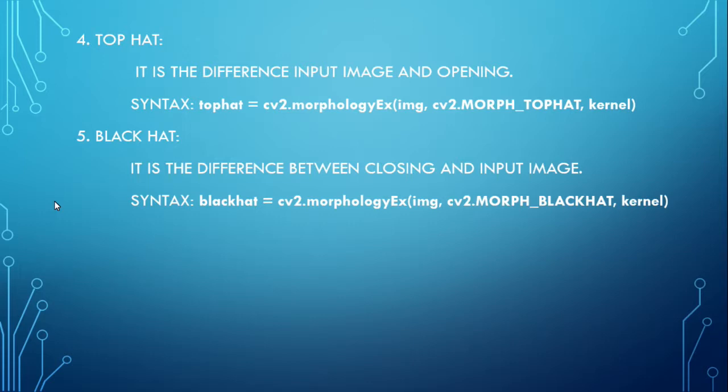The next is black hat. It is the difference between closing and input image. The syntax is: blackhat = cv2.morphologyEx(img, cv2.MORPH_BLACKHAT, kernel).